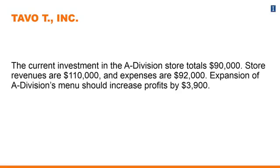Currently, the A Division has a total investment, or asset base, of $90,000. Store revenues on an annual basis are approximately $110,000, and expenses are $92,000. The expansion of A Division's menu should increase profits, it's projected, by about $3,900.